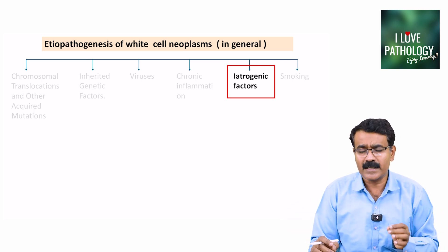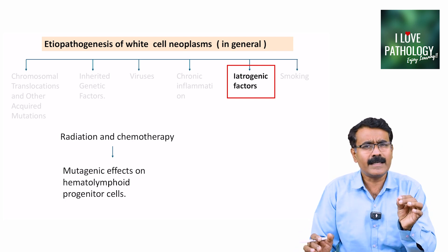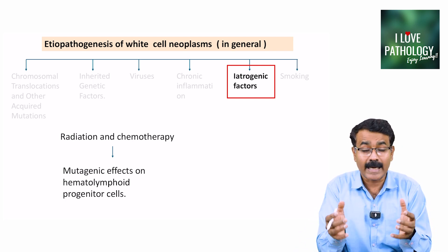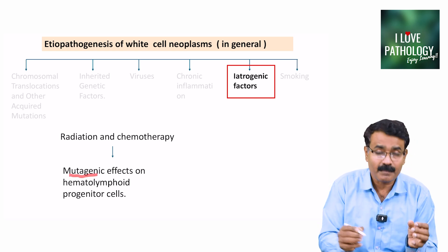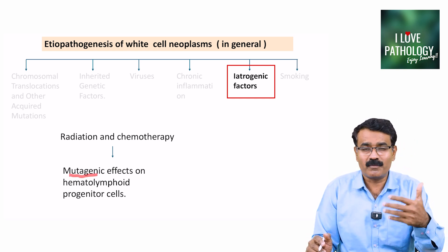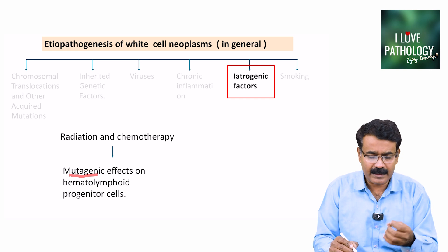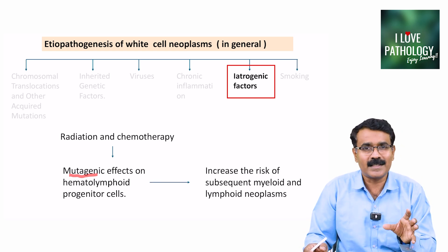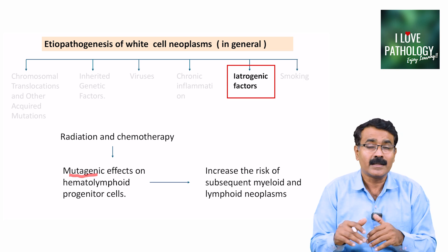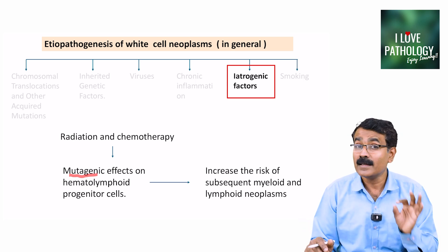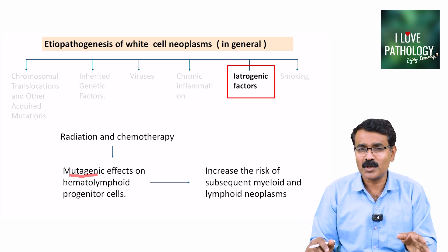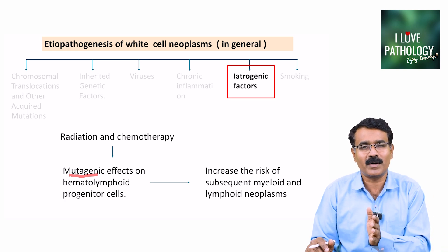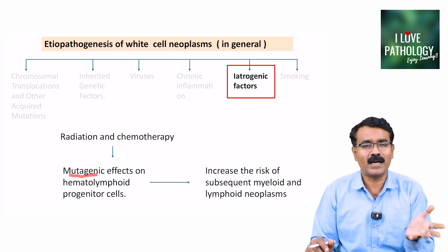Iatrogenic factors include radiation and chemotherapy, both of which can be mutagenic and increase the chances of mutation. These mutagenic effects on hematolymphoid progenitor cells increase the risk of subsequent myeloid or lymphoid neoplasms. Both radiotherapy and chemotherapy carry increased risk of development of lymphoid or myeloid neoplasms.